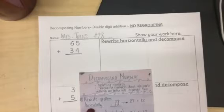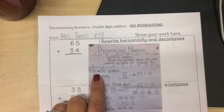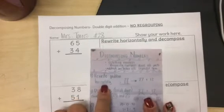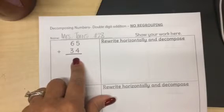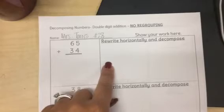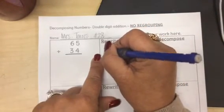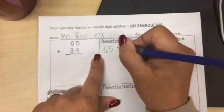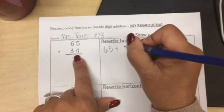Please read step number one on your mini anchor chart. Rewrite problem horizontally. So we've got the number 65 plus 34. Right now it's written vertically, but we are going to rewrite it horizontally. Write 65 at the top of the page because we're going to be needing space, plus the next number is 34.